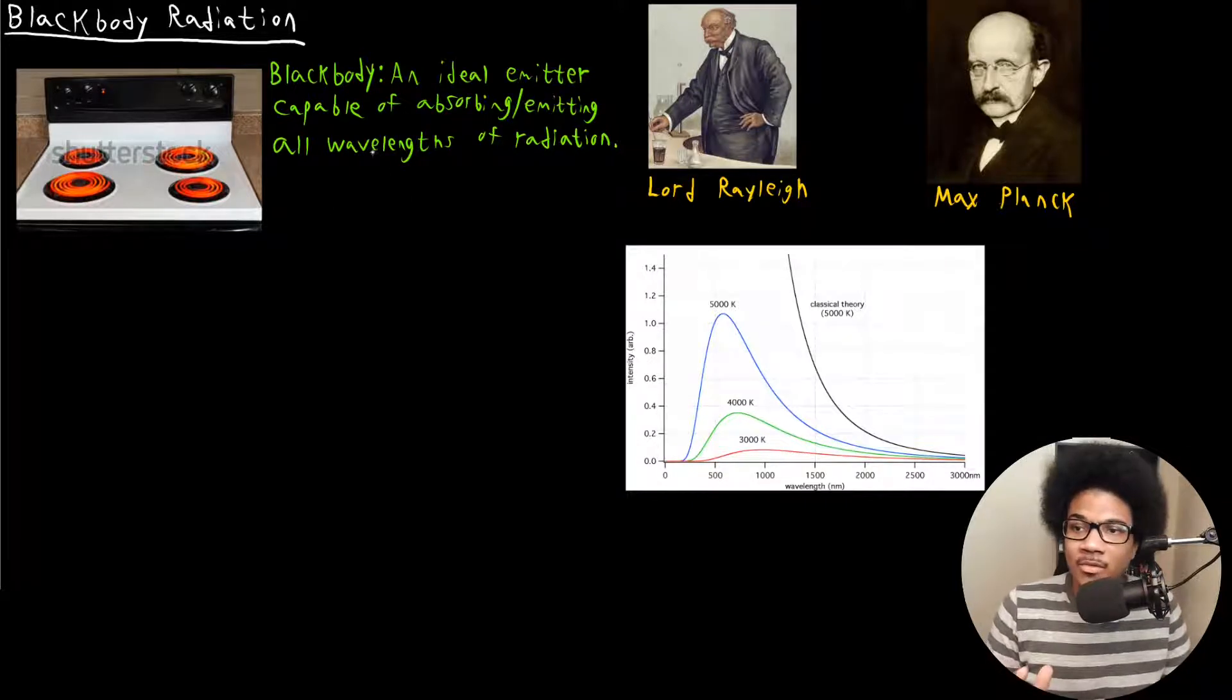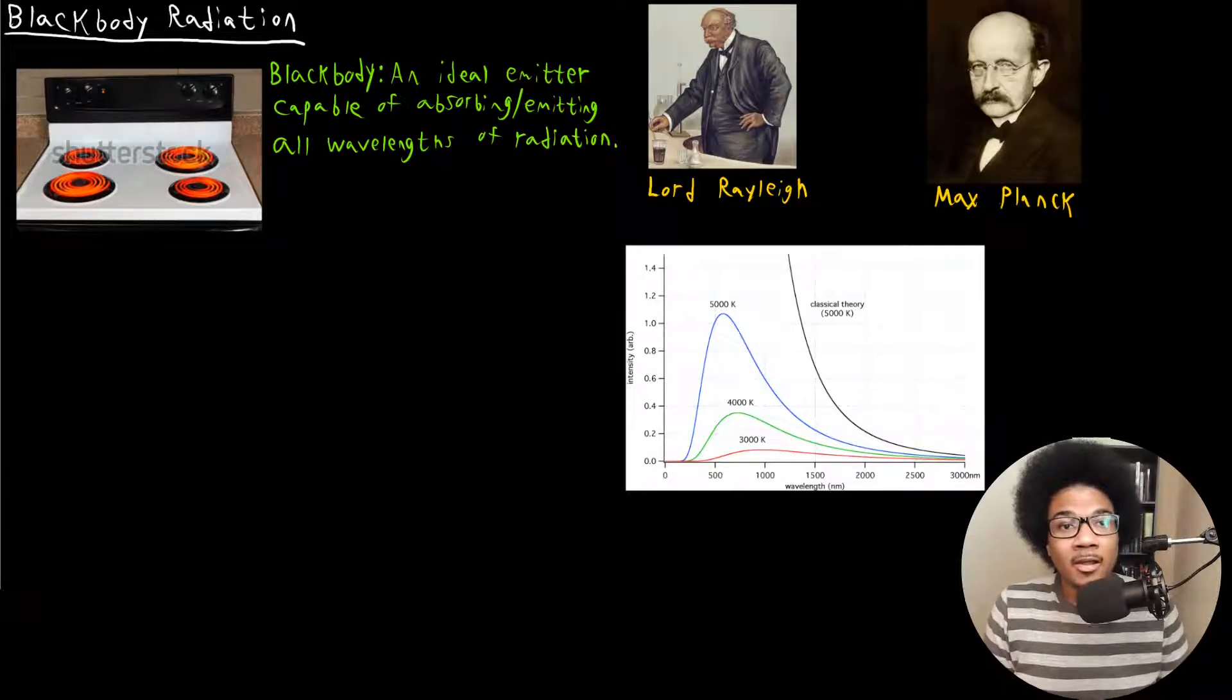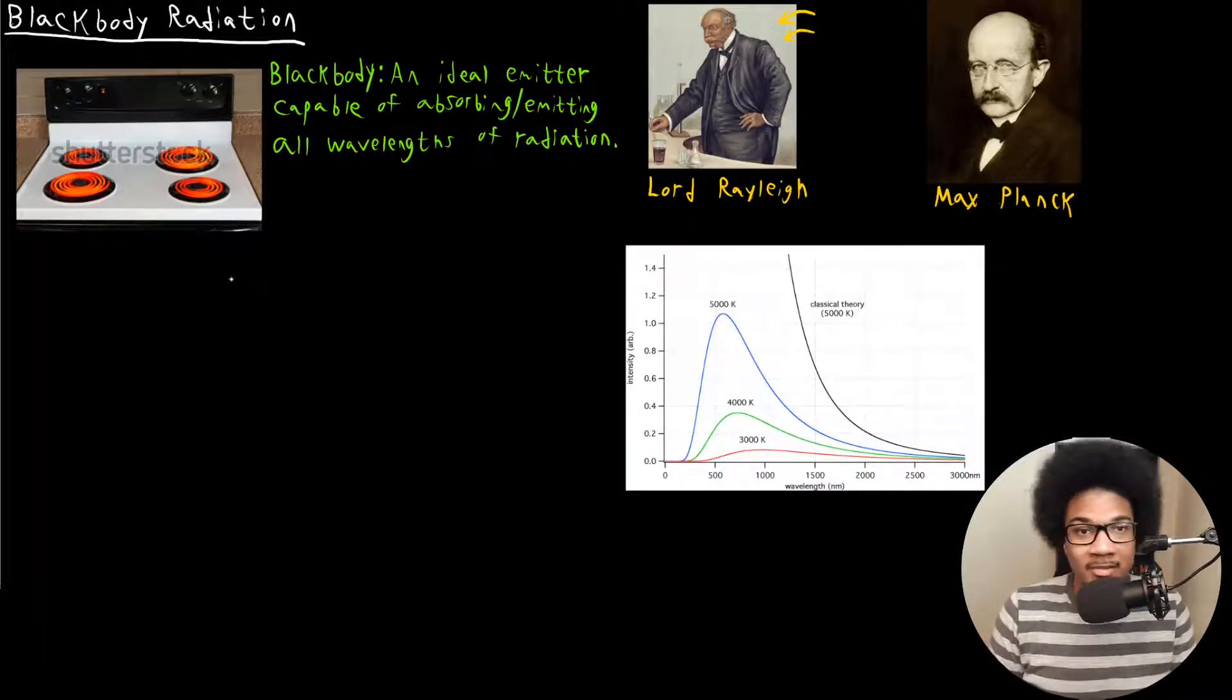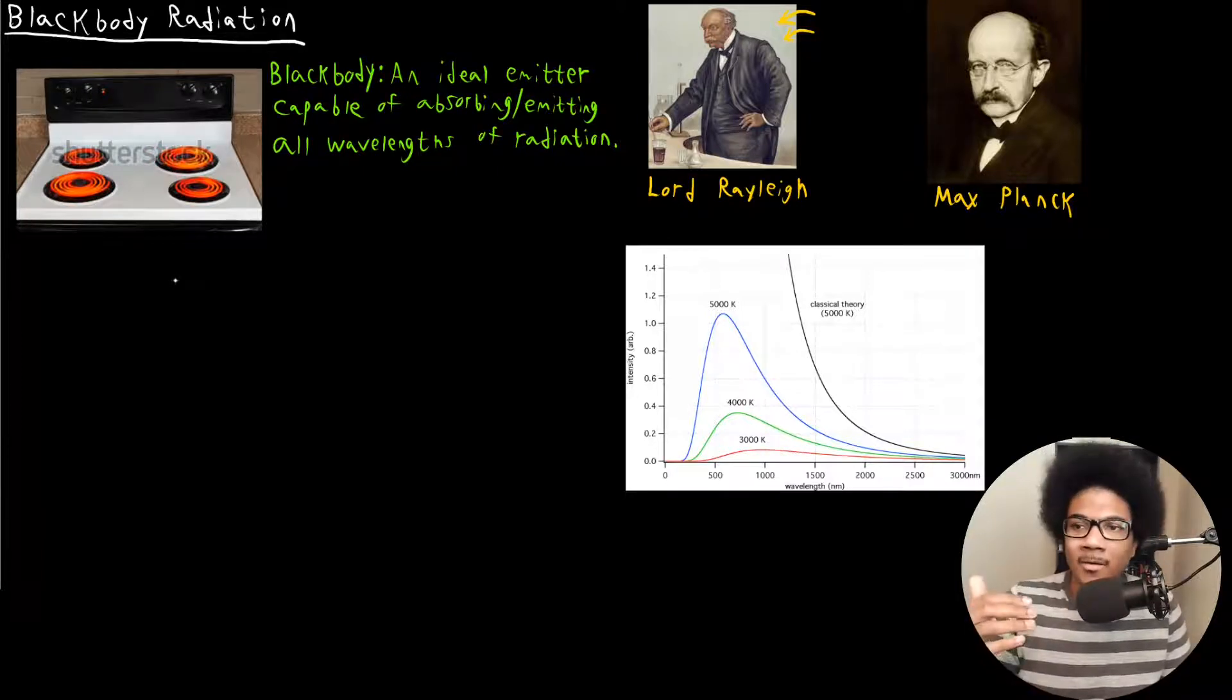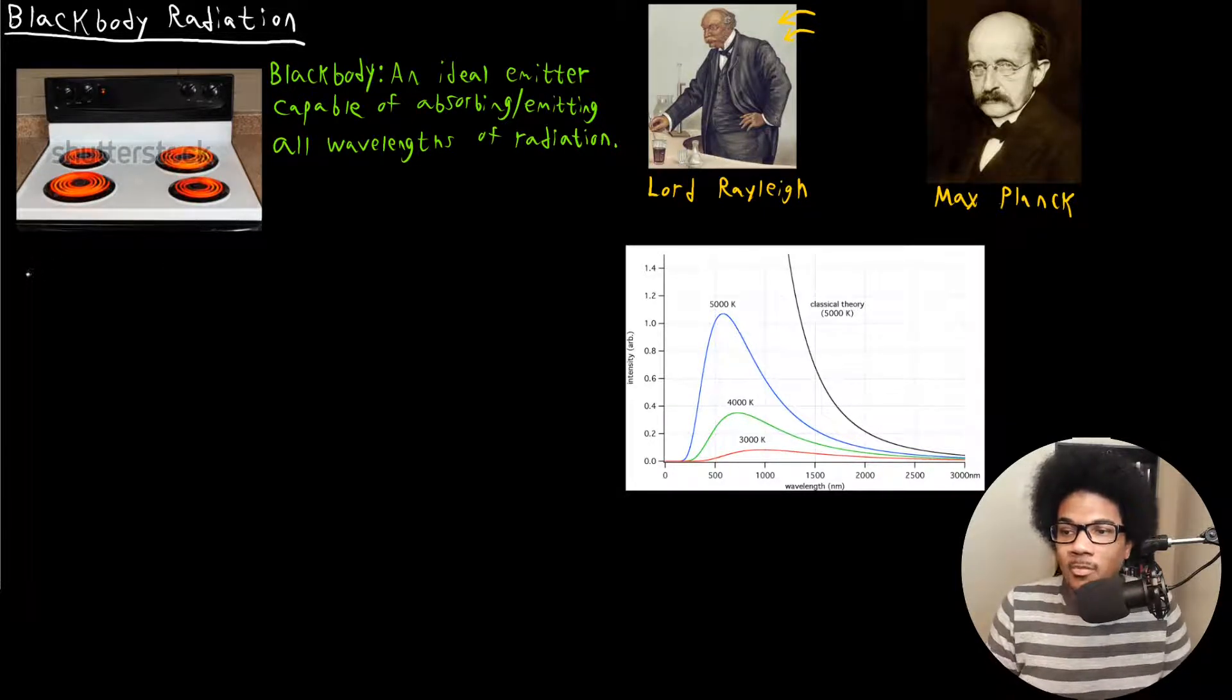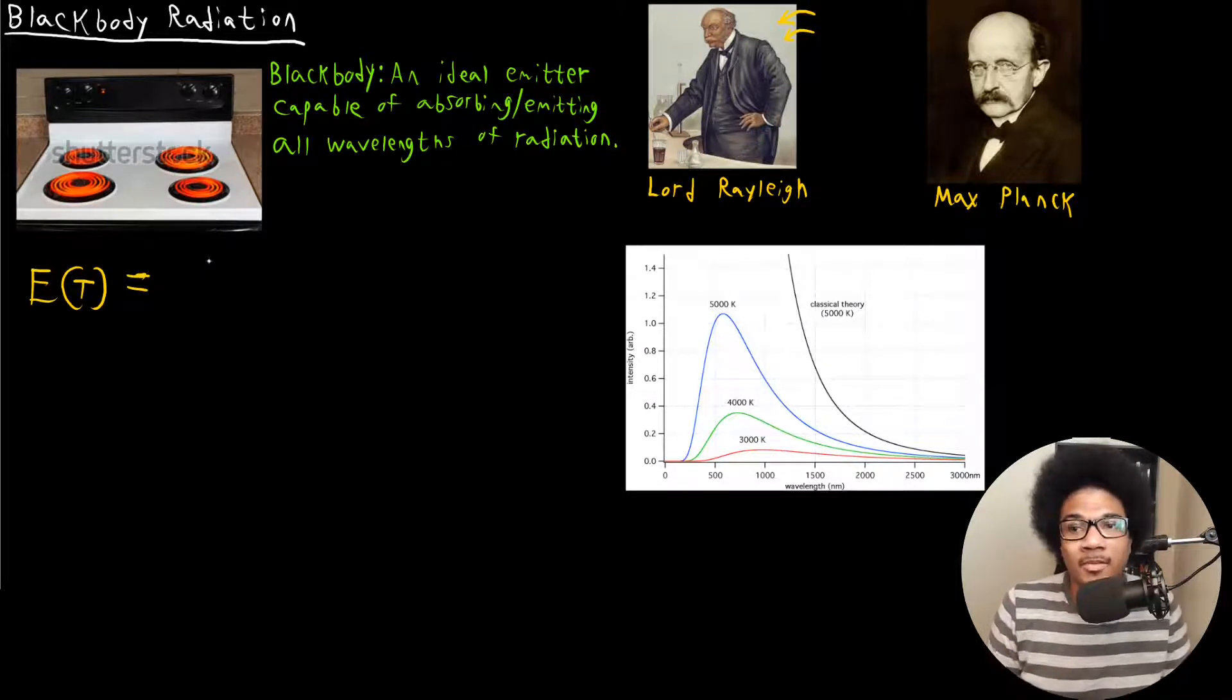This was a huge scientific challenge as far as trying to model this emission of radiation by a black body. In the 1800s, this problem was attacked by Lord Rayleigh, a scientist in the 1800s. He first started to attack this problem. If you want to figure out how to model the energy intensity of a black body, you want to come up with a distribution for its energy.